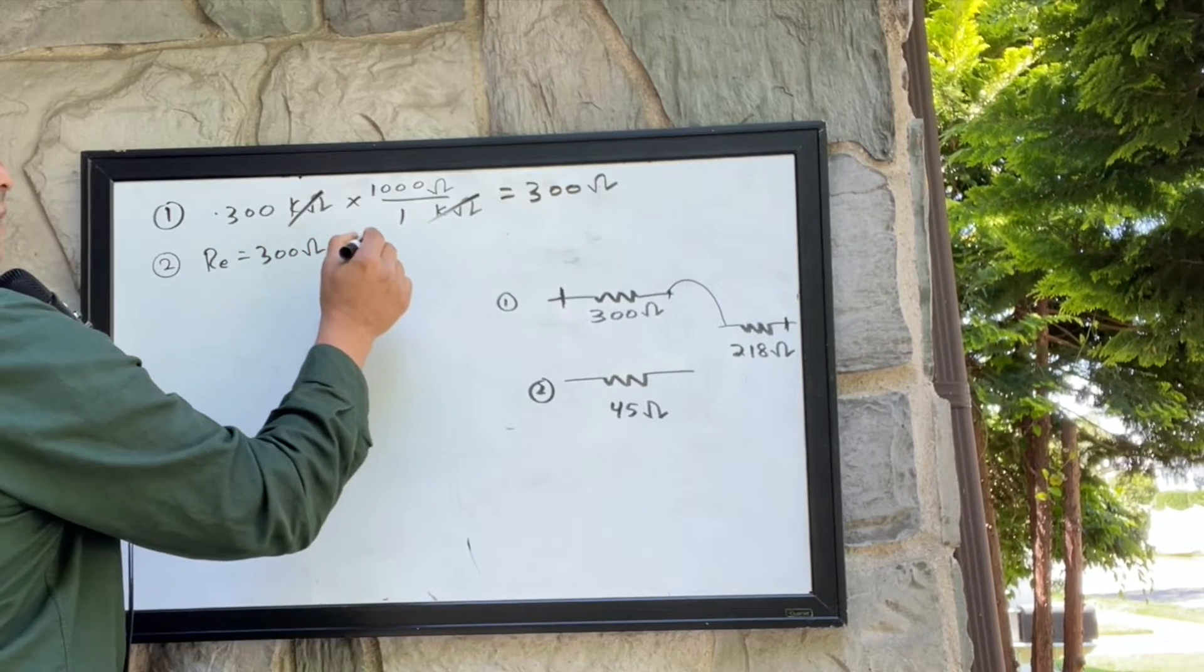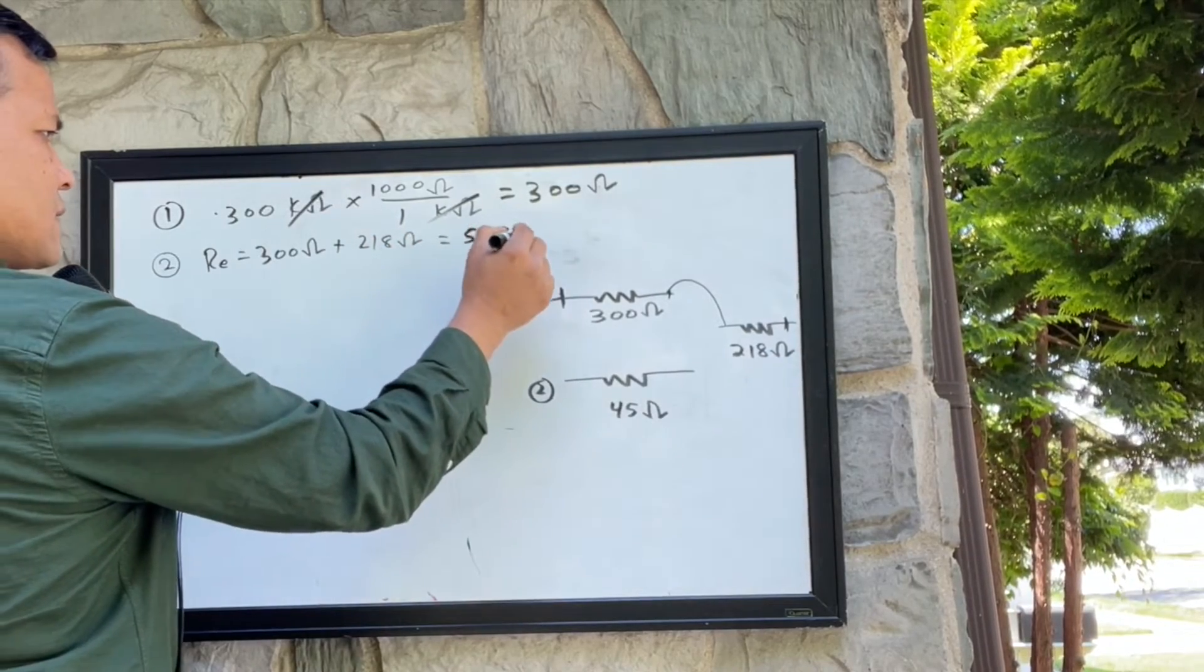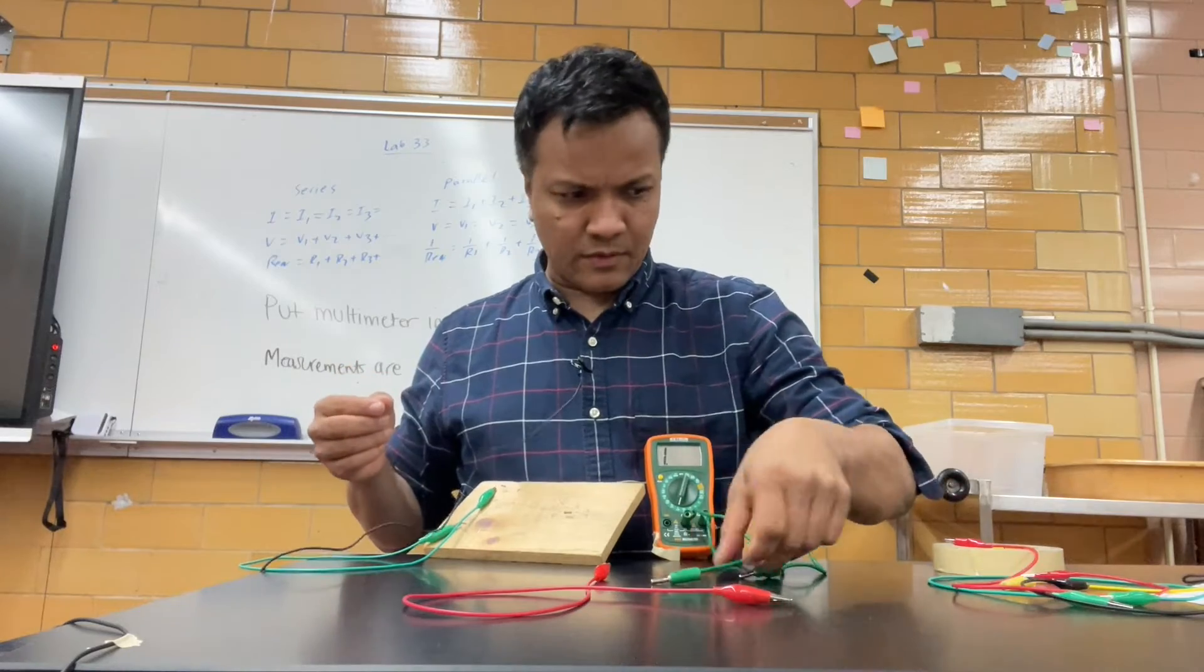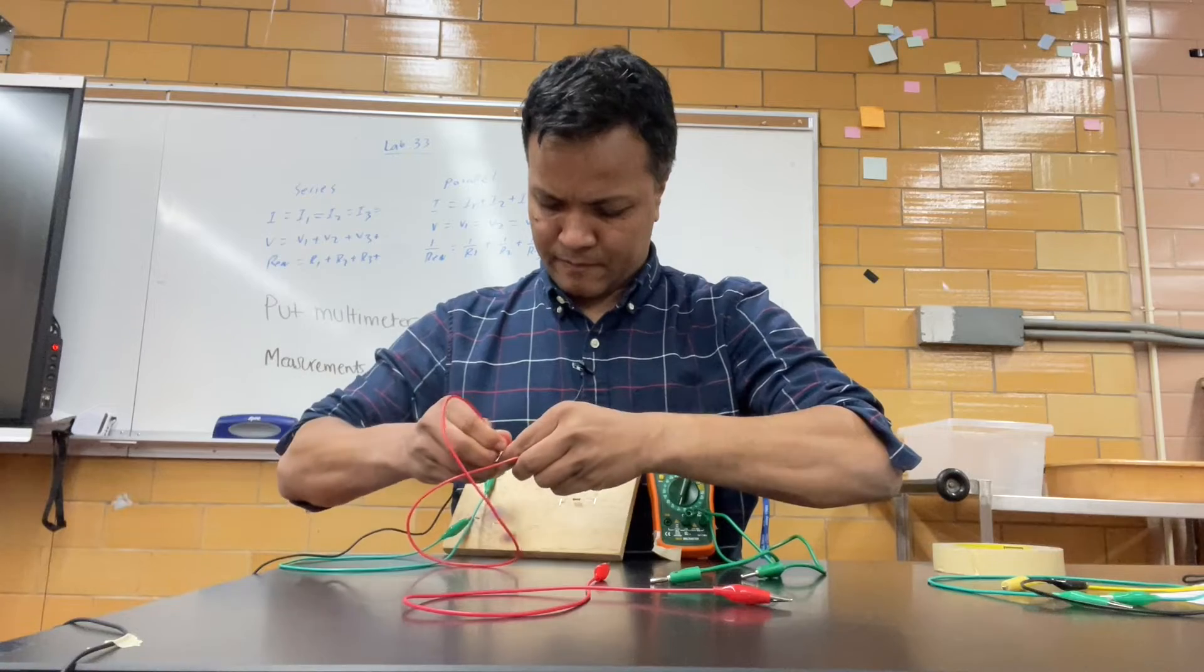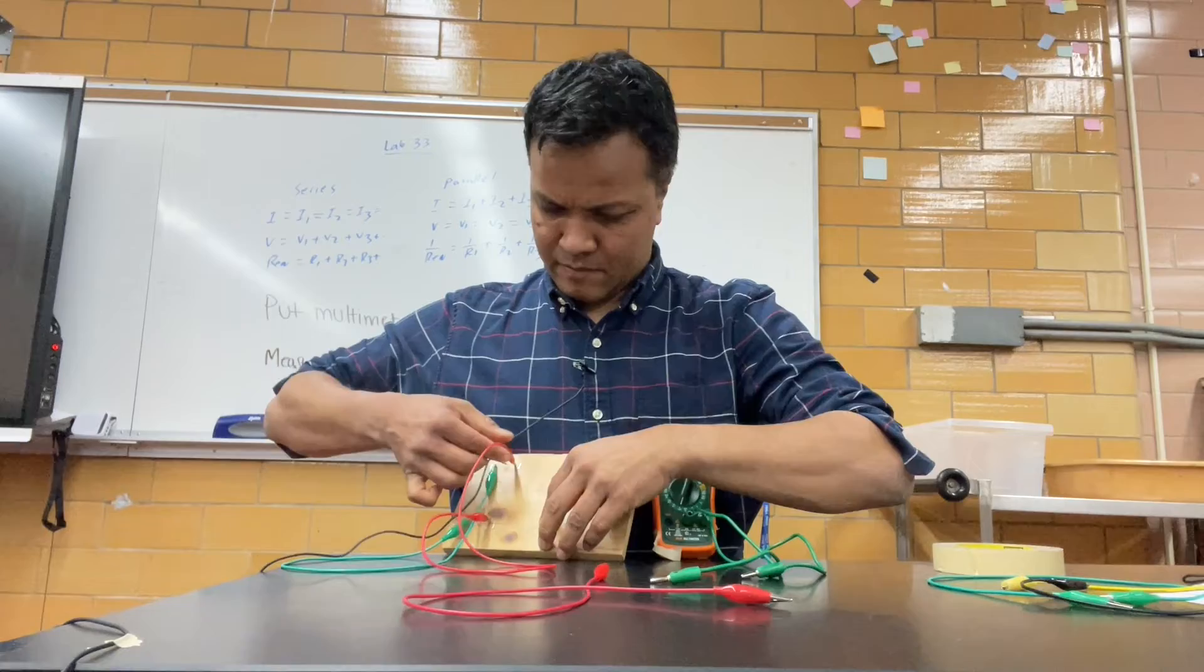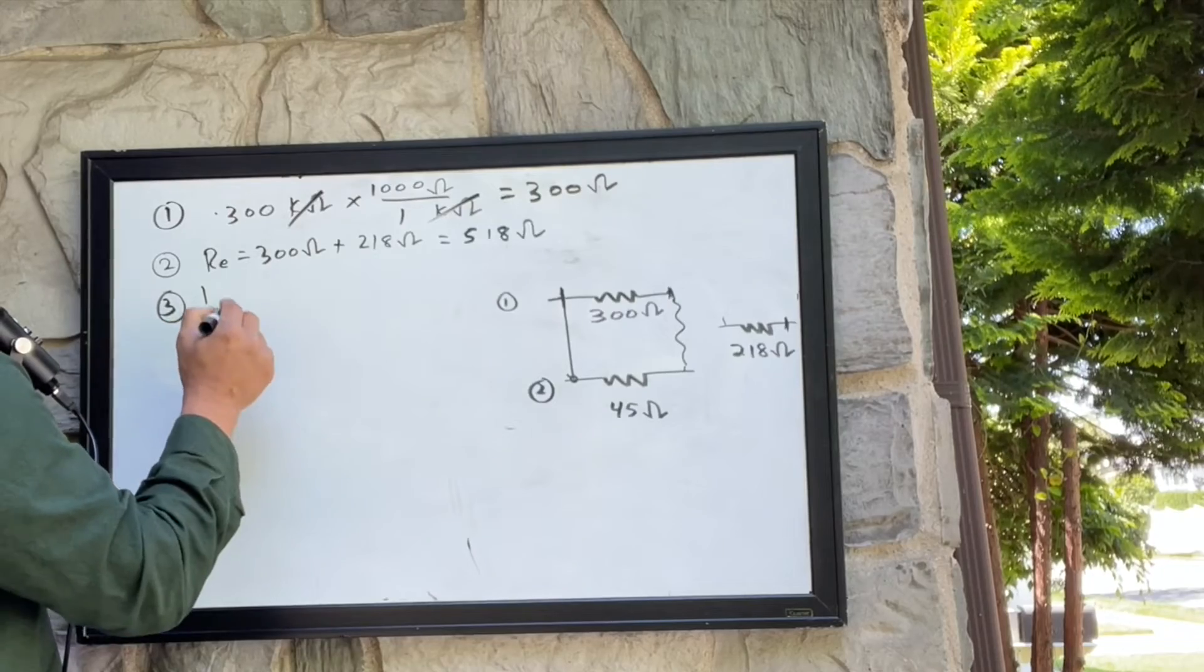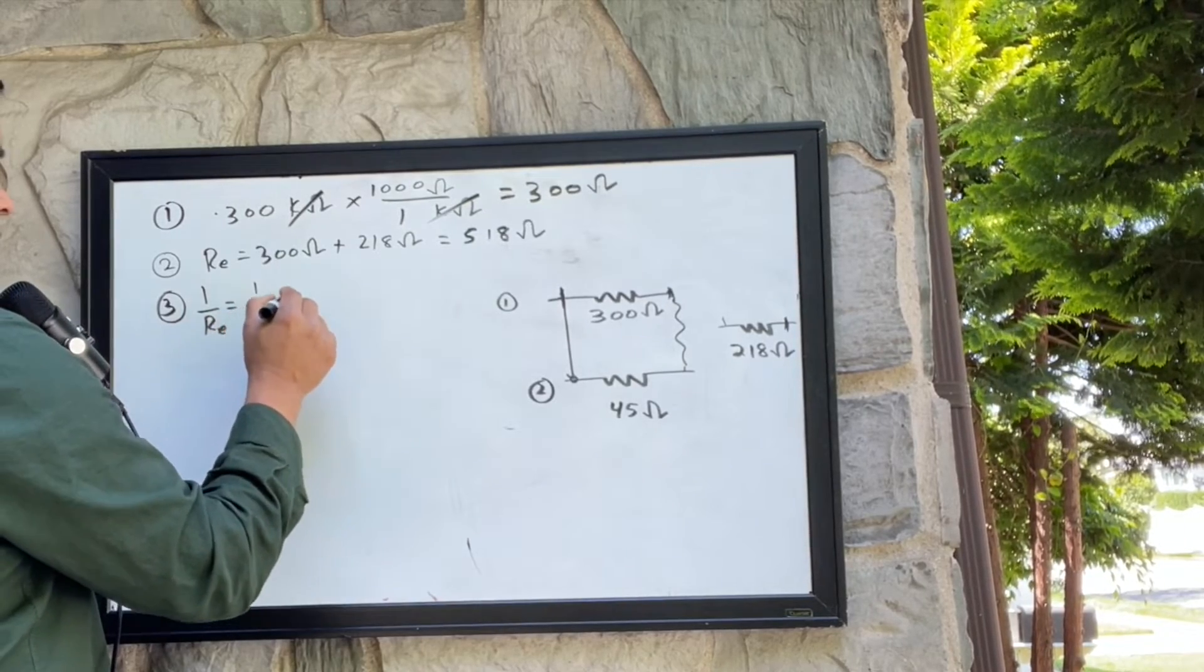I make a parallel circuit and this one gonna go here, and let's use the ammeter to do the resistance. The reciprocal formula: 1 over 300 plus 1 over 45.